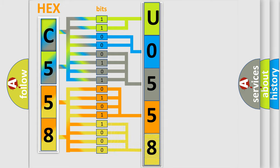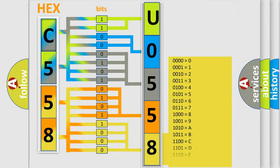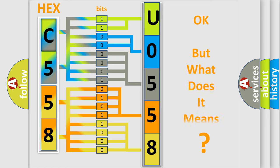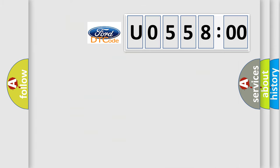A single byte conceals 256 possible combinations. We now know in what way the diagnostic tool translates the received information into a more comprehensible format. The number itself does not make sense to us if we cannot assign information about what it actually expresses. So, what does the diagnostic trouble code U055800 interpret specifically for Infiniti car manufacturers?